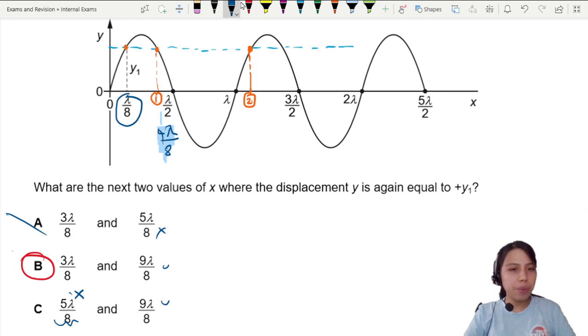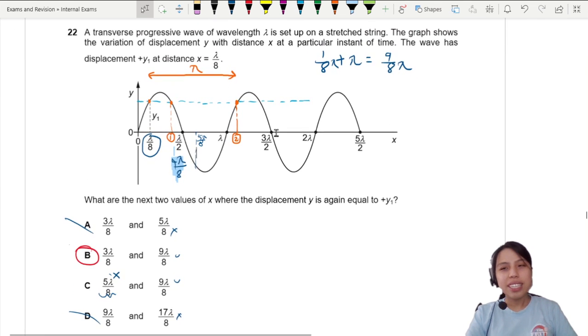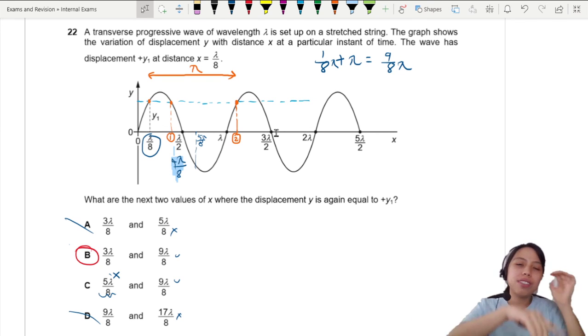5/8 is probably somewhere here, I'm guessing. This will be 5/8 lambda. Alright, so make sure you know how to find the two points. One is one wavelength later. The other one is a certain amount of cycle later. Okay, that's how I can do this wave graph question.